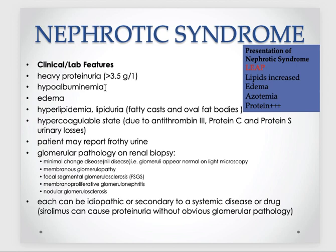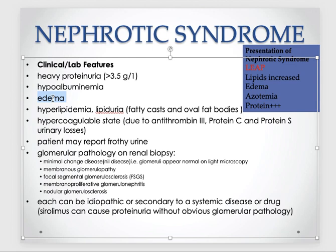When albumin levels fall — as Guyton explains — there is something called oncotic pressure. Proteins hold a lot of water. So when proteins are lost, the fluid-holding capacity of the intravascular space is reduced and fluid starts leaking into the interstitial spaces. So patients will develop edema.